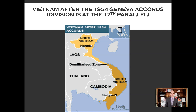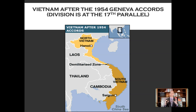At the Geneva Accords, three agreements were worked out. First, the French gave up claims to Indochina. Second, Vietnam would be divided into north and south at the 17th parallel — kind of like Korea. Third, there would be free, fair, and internationally supervised elections to unite the country two years after the Geneva Accords in 1956. It was agreed upon that there would be fair elections and the country would be united.